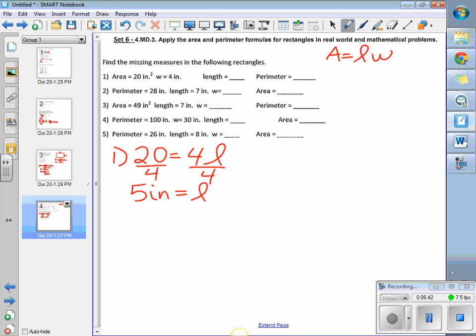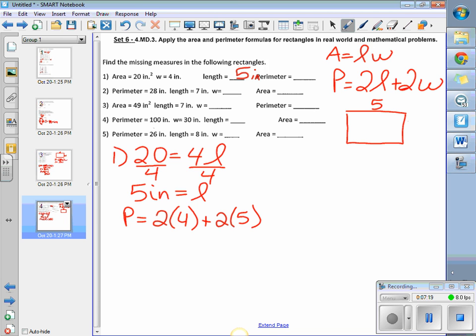Now I've got to find my perimeter. So if I figured out my length, I can now do my perimeter is still 2 lengths plus 2 widths. So now I've got perimeter is 2 times 4 plus 2 times 5. If it helps you draw your rectangle, I've got 2 fives and 2 fours. So I've got 8 on my short sides, and 10 on my long sides, which gives me a perimeter of 18 inches.